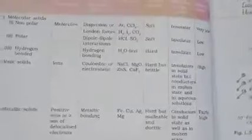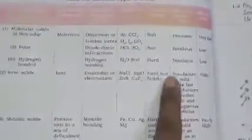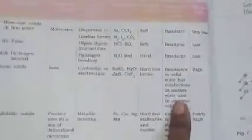They are hard but they are brittle. If we hit it with hammer, they will break into pieces. Insulator is solid, but in molten state, it will be present as a conductor. And the melting point will be high.